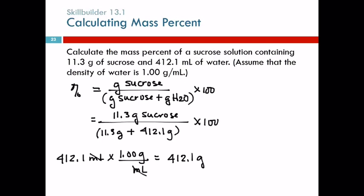Times 100. Now, you need to be careful when you do this on your calculator. So I'm going to do 11.3 divided by, and I'm going to open parentheses and do 11.3 plus 412.1, close the parentheses, times 100. This should have three sig figs, so 2.67%.